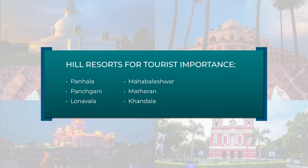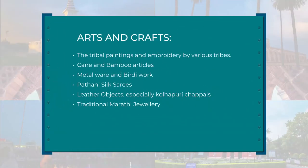Maharashtra has a beautiful landscape with a long coastline and hill regions. The beaches around Mumbai are a big attraction. There are hill resorts of tourist importance like Panhala, Mahabaleshwar, Panchgani, Matheran, Lonavala, and Khandala. Maharashtra also has a long history of arts and crafts, many of which are still surviving. These include tribal paintings and embroidery, cane and bamboo articles, metal wear and bidri work, Paithani silk sarees, leather objects — especially Kolhapuri chappals — and traditional Marathi jewellery.